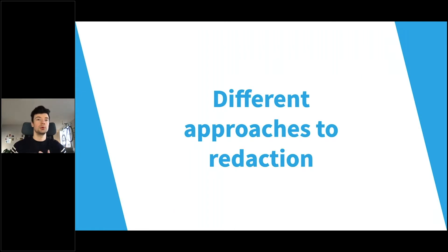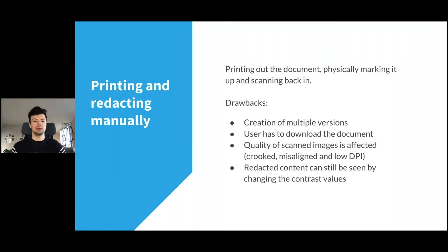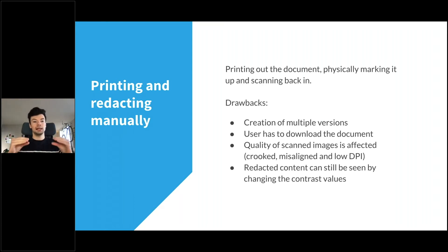We're going to take a look at different approaches to redaction — how it's been done historically and what the better ways to do it are today. Historically, we're all familiar with printing out a document, physically marking it with a sharpie or black highlighter, then scanning it back in. Even before that, redaction was a manual process of physically cutting out the information that needed to be removed.